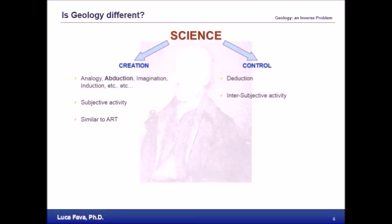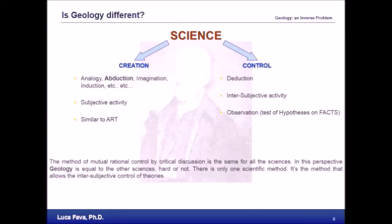Assuming this definition of science, geology is as science as all the others. There is only one scientific method, the one using mutual rational control of theories. That's why I said before that intersubjective control, intersubjectivity is very important. So, geology is like every other science. The only difference is that geology is mainly dealing with the inverse problem.